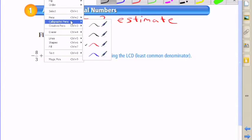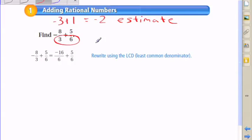So what you want to do is rewrite. To find the exact answer, let's begin rewriting the fractions using the least common denominator, which is 6, because 3 goes into 6. So we're going to change negative 8 thirds into negative 16 sixths.